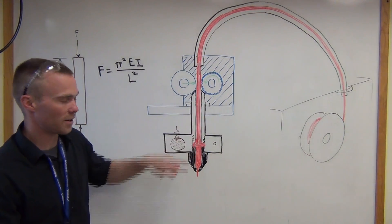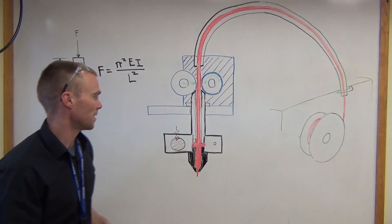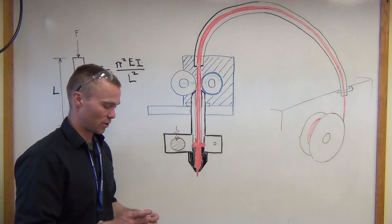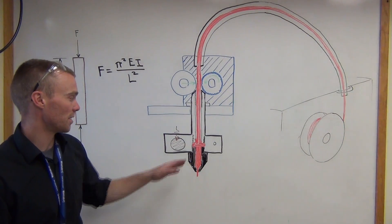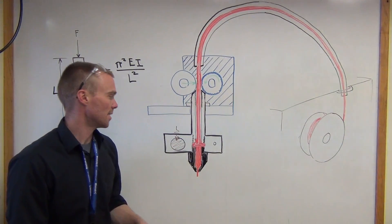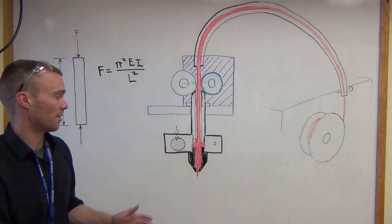Retraction is definitely important and effective with printing NinjaFlex, but with some extruders it can cause problems. If you're just starting out with NinjaFlex and you're not able to get good prints, turn off retraction for a while.